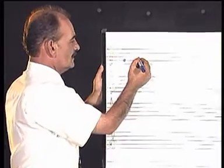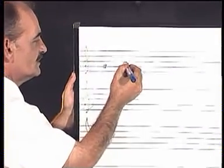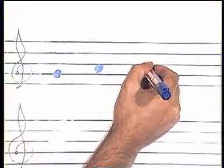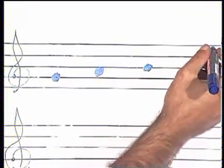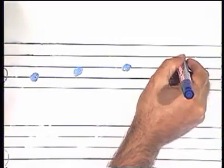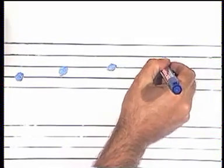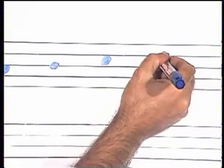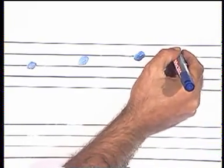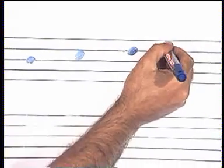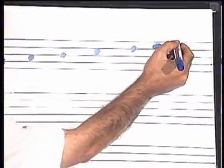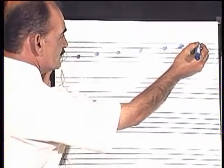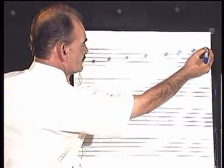First we'll start with the notes that are on the second line from the bottom, then the ones in between the second and the third line, the ones between the third and the fourth line, the ones between the fourth and the fifth line, and the ones on the fifth line. The last one is above the stave.